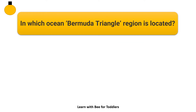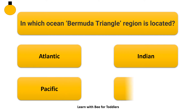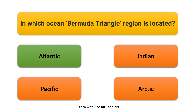In which ocean is the Bermuda Triangle region located? Atlantic. Indian. Pacific. Arctic. The answer is Atlantic.